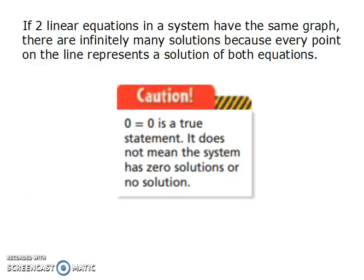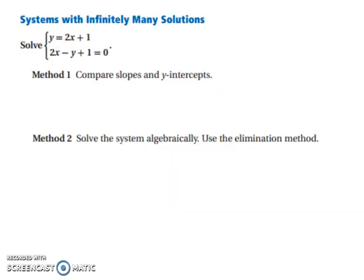If two linear equations in a system have the same graph, there are infinitely many solutions, because every point on the line represents a solution of both equations. Caution: 0 equals 0 is a true statement — it does not mean the system has 0 solutions or no solution. So let's look at systems with infinitely many solutions.